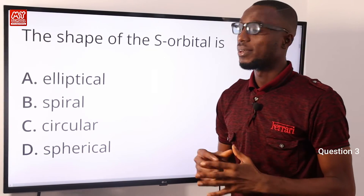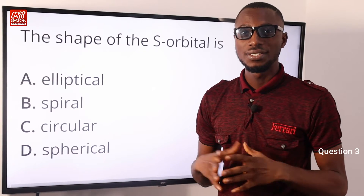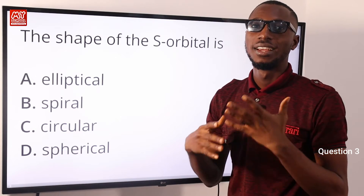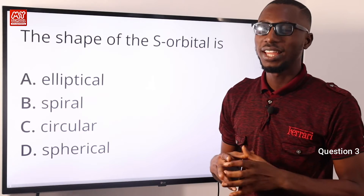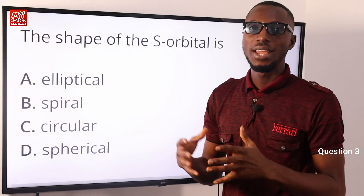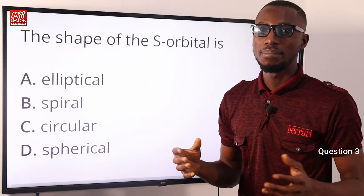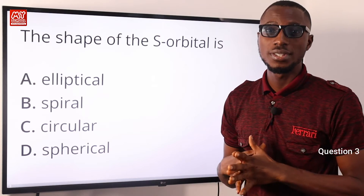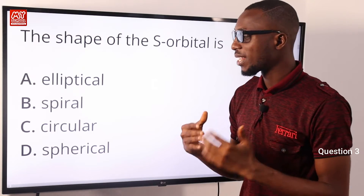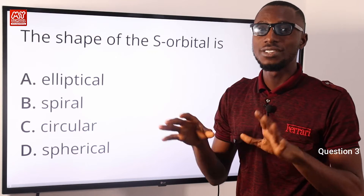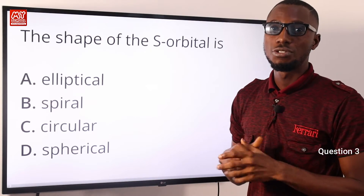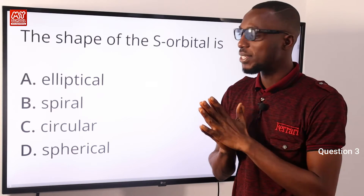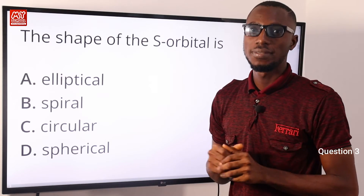Question three: the shape of the s-orbital is what? It is actually spherical in shape. The p-orbital is dumbbell-shaped. The d-orbital is clover-shaped. The f-orbital, because of the number of electrons it contains, tends toward having a tetrahedral structure. Going back to our question, option D is the correct option for spherical.